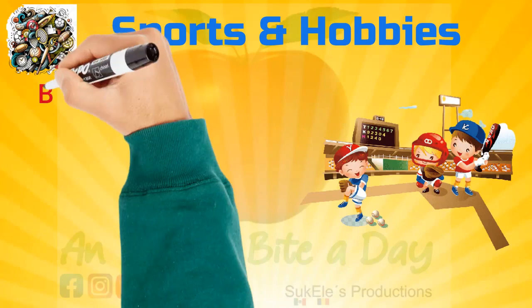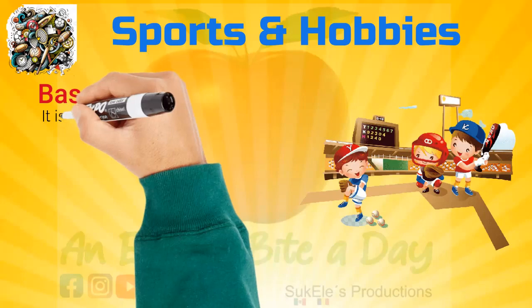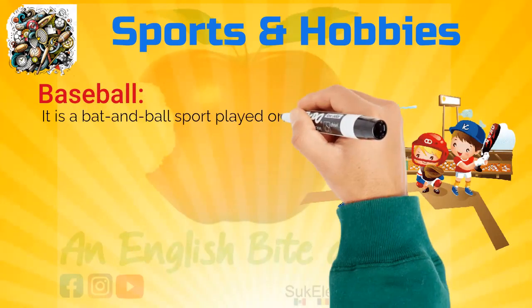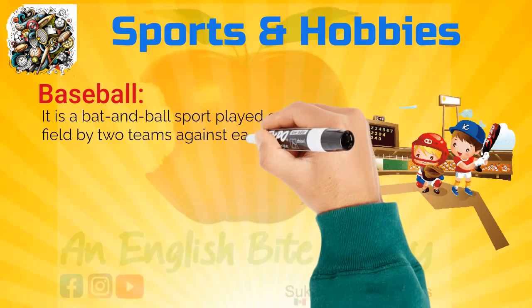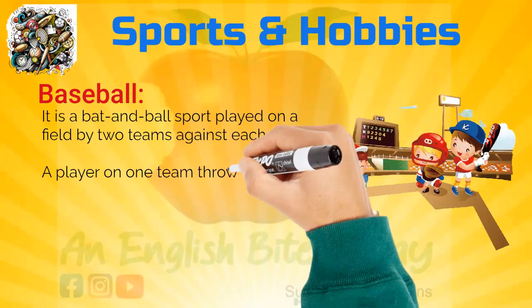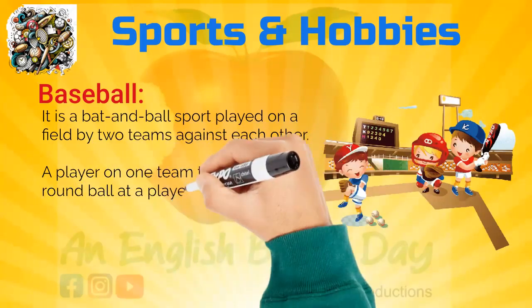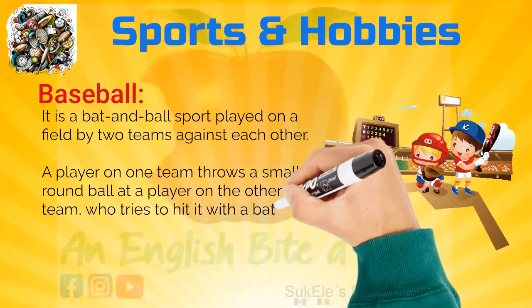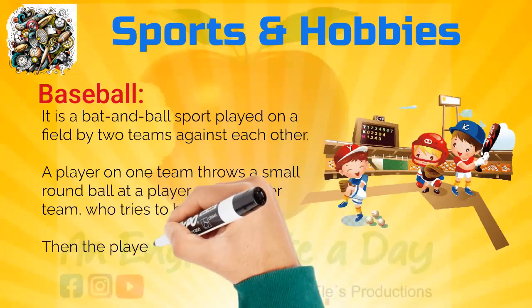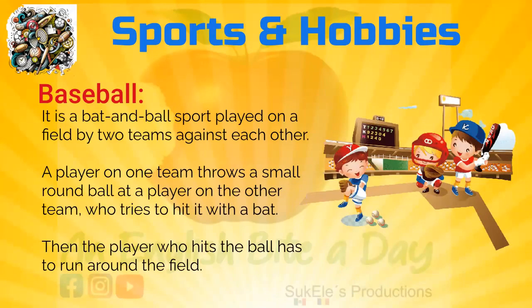Baseball. It is a bat and ball sport played on a field by two teams against each other. A player on one team throws a small round ball at a player on the other team, who tries to hit it with a bat. Then the player who hits the ball has to run around the field.